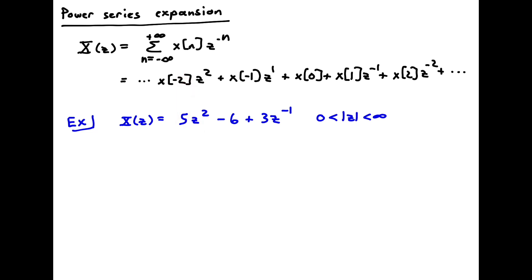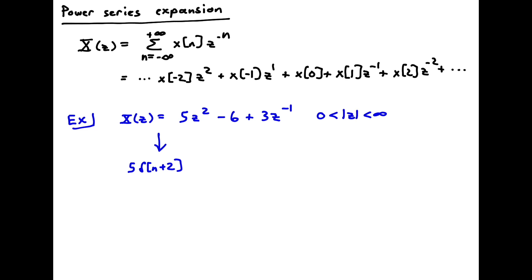We're going to have a finite length sequence with three terms in it. And so we can simply take the inverse transform here. This will be the term associated with x of minus 2. So this will be 5 delta of n plus 2. That's a delta function at n equal minus 2. And then this term here is a delta function just at 0. And this term here is a delta function at 1. And so we can say x of n is just equal to these three delta functions, one at minus 2, one at 0, and one at 1, just by doing a term-by-term inverse here.